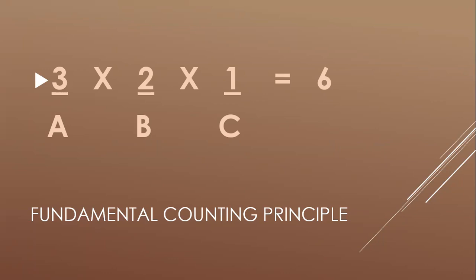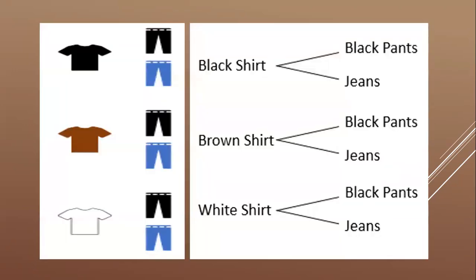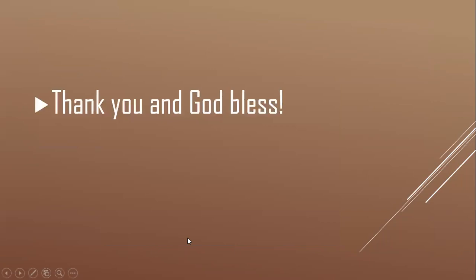Using the fundamental counting principle: 3 × 2 × 1 = 6. Next, suppose you have a black shirt, a brown shirt, and a white shirt, and you also have blue jeans, black jeans, and black pants. We have three shirts and two bottoms. In a table: black shirt–black pants, black shirt–jeans, brown shirt–jeans, brown shirt–black pants, white shirt–black pants, and white shirt–jeans. So we have six outfits. Thank you very much for watching — hope you understand!